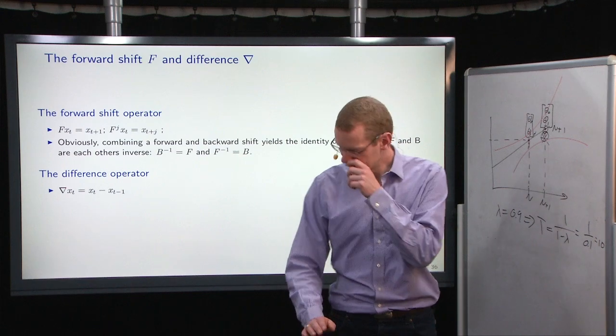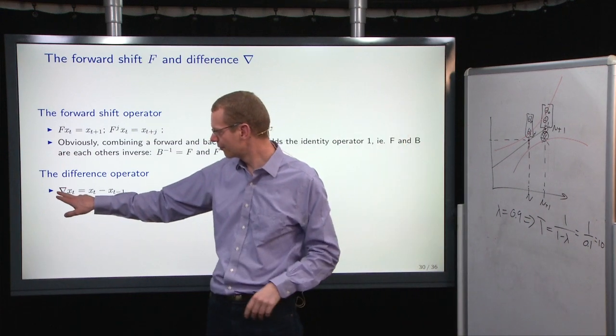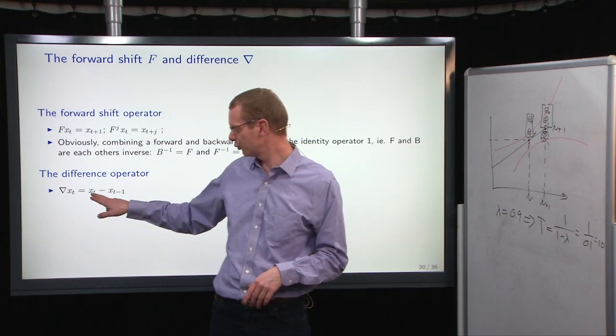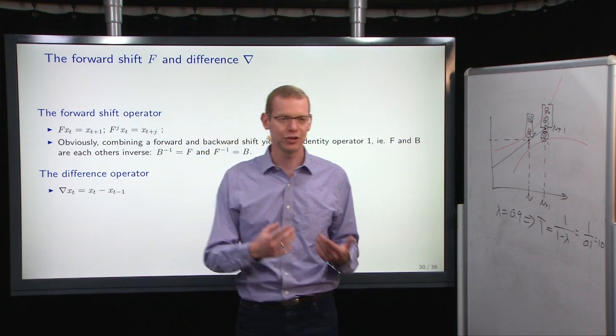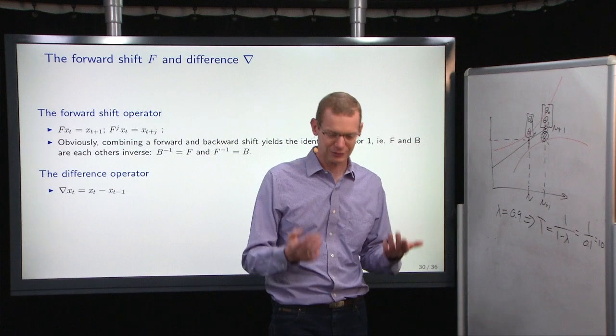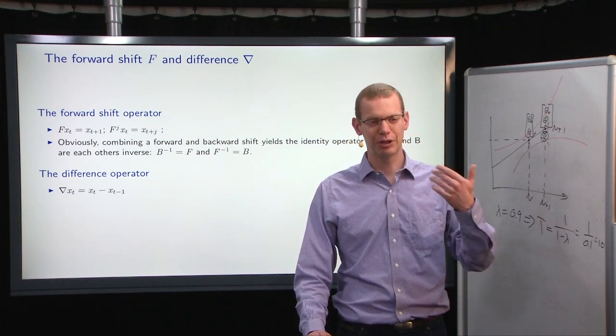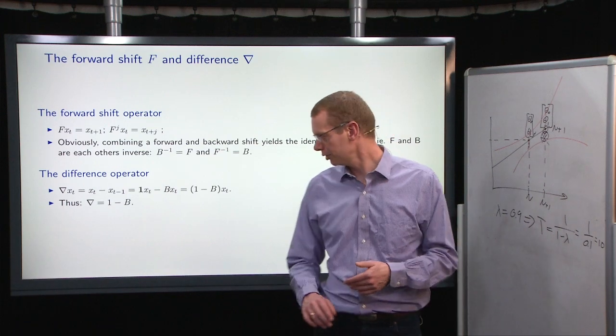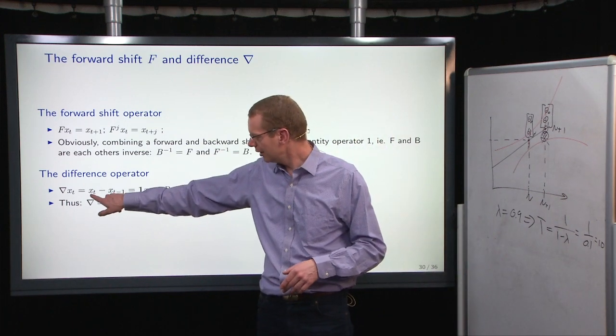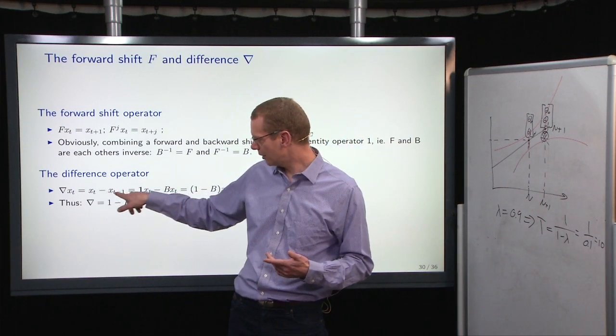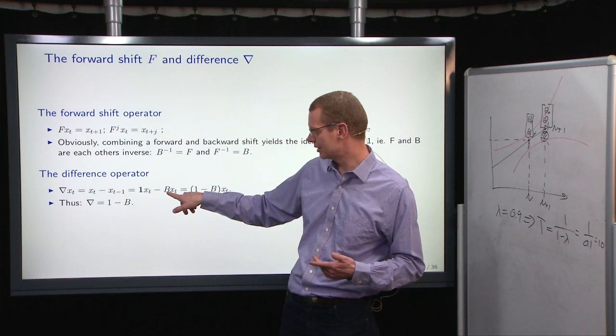The difference operator that we have here, when you apply that on x_t, well what we have here, x_t, that's the identity operator 1 on x_t, and x_{t-1}, that's B x_t.